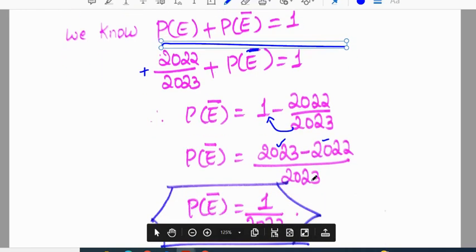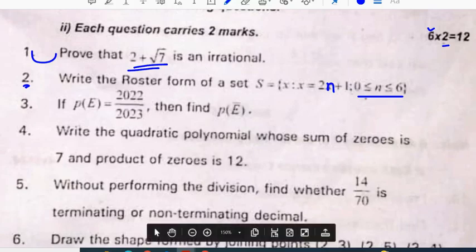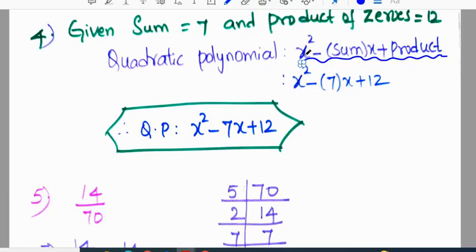Write the quadratic polynomial sum of zeros is 7 and product of zeros is 12. We know the quadratic polynomial formula: x square minus sum of zeros into x plus product of zeros. So x square minus 7x plus 12 is a quadratic polynomial. Sometimes they will give zeros. If zeros are given you have to add and multiply. If sum and product are given directly replace. This is one of the important questions students.